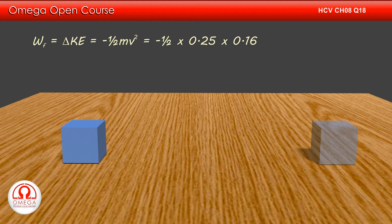Putting the values, we get work done by friction is equal to minus half into 0.25 into 0.16 or minus 0.02 joules. This is answer to the first part of the question.